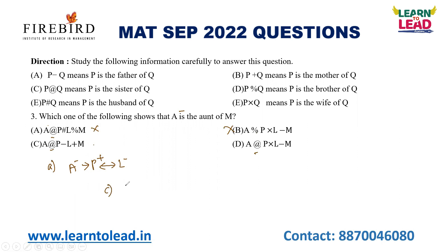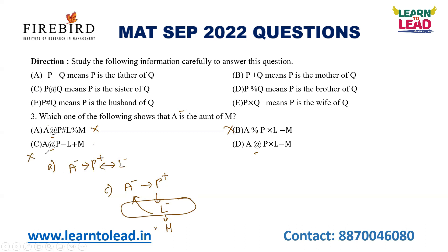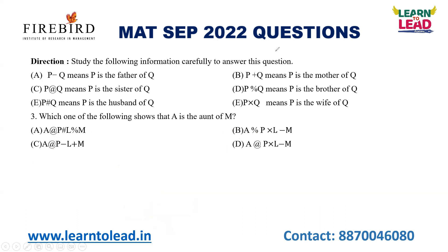Continuing the aunt relationship check: A is the sister of P (at = sister), P is the father of L (minus = father), L plus denotes mother. The aunt is one generation — if we have grandfather, grandmother, and grandson relationships across two generations, that doesn't match. So options A, C are eliminated, and if option D also doesn't match, the answer would be D or whichever remaining option correctly places A as the aunt.